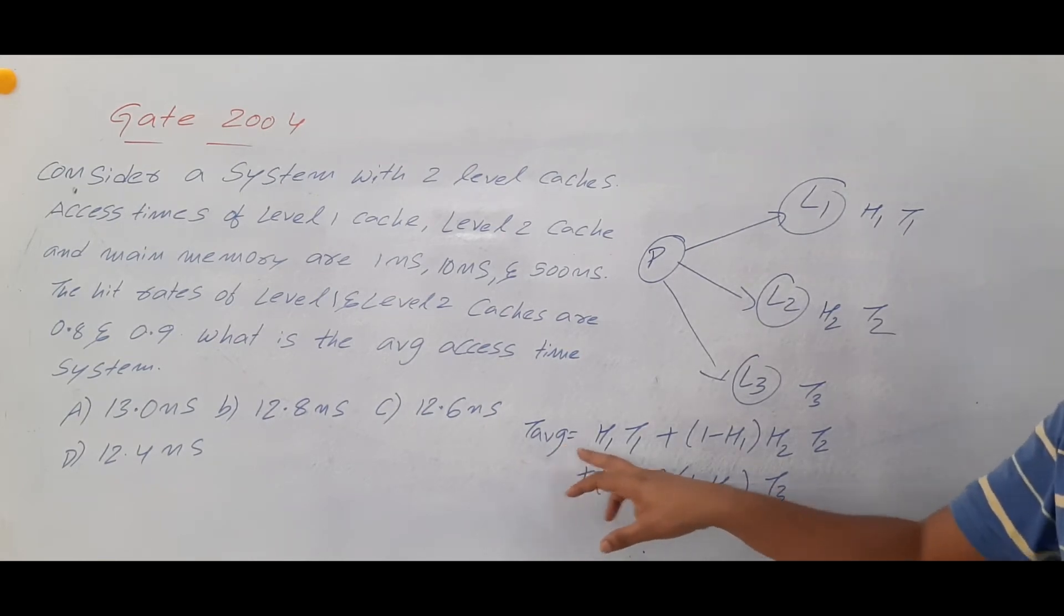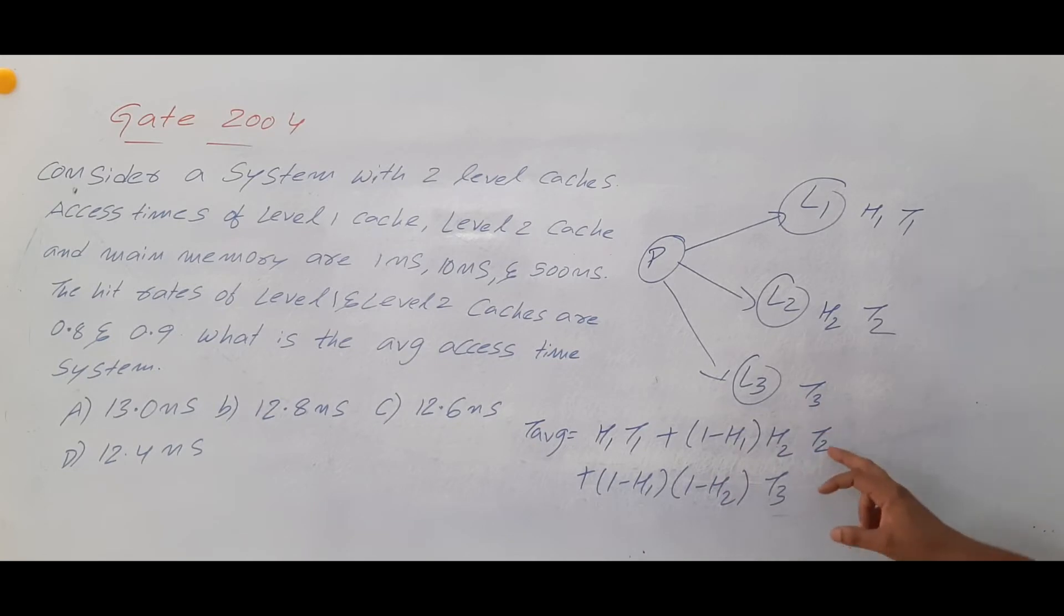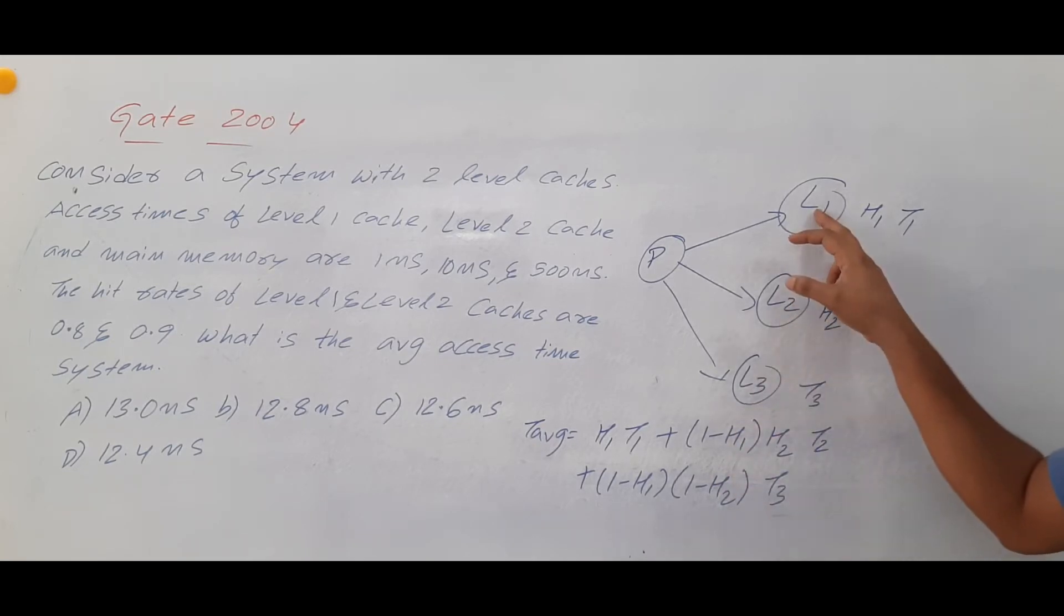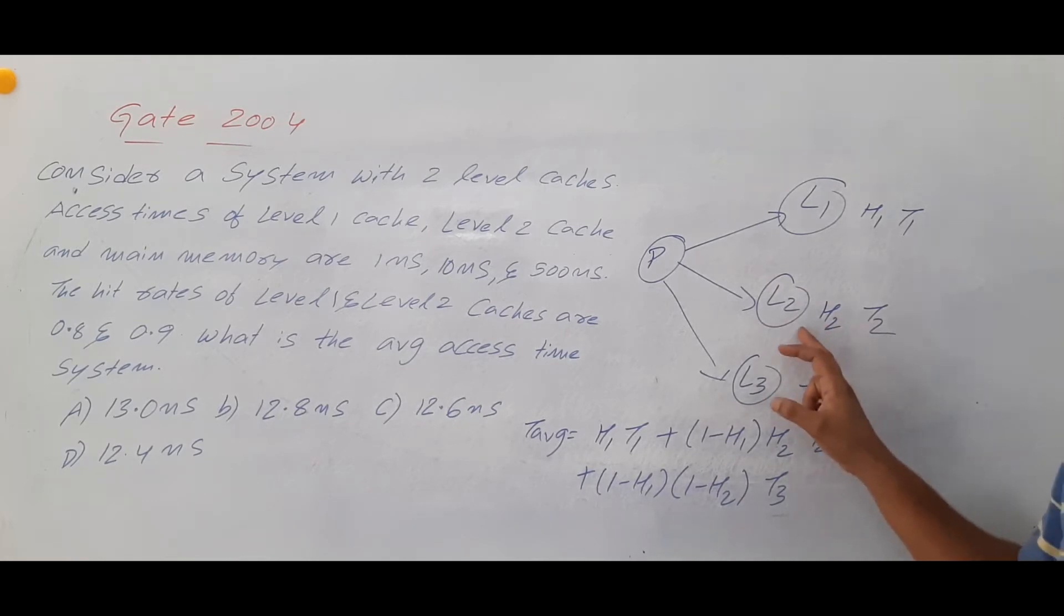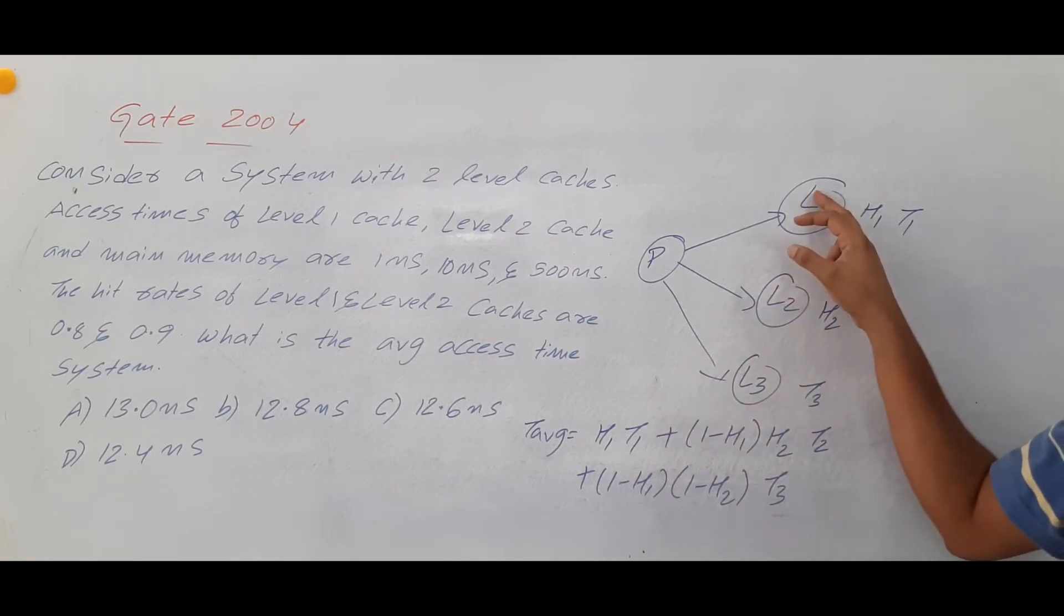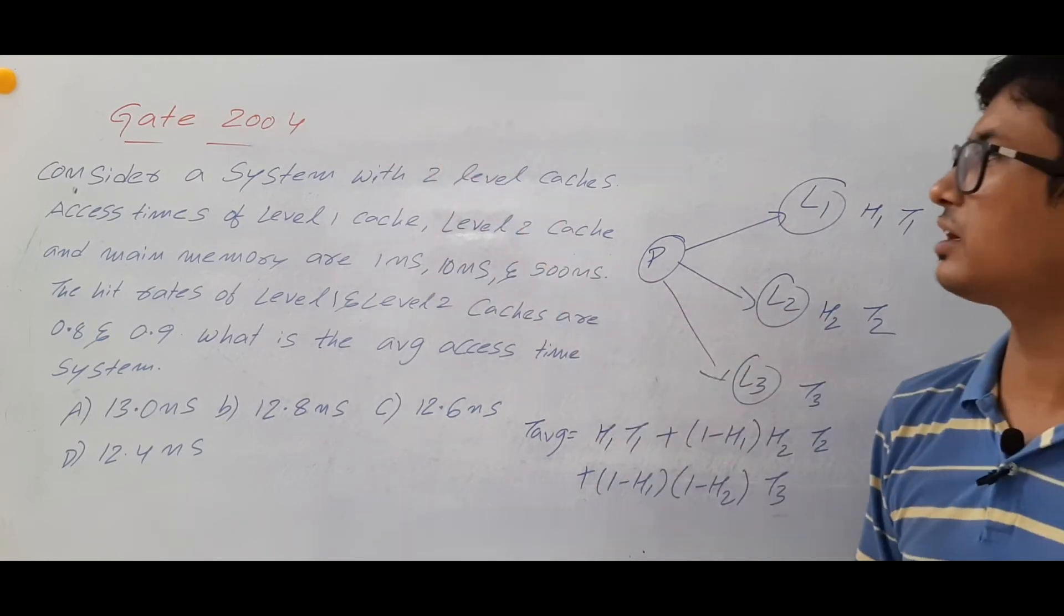T average is equal to hit ratio of level 1 into access time of T1 plus 1 minus H1 into H2 into T2 because if it is not available we will say that it is a miss. And what is the chance of that information is available in level 2 which will be given by hit ratio H2 and time taken for searching is T2. And if it is not available in L1, 1 minus H1, if it is not available in L2 it is 1 minus H2 and time for searching here it is T3. So using this formula we will calculate this one.